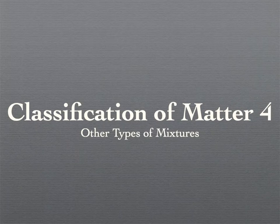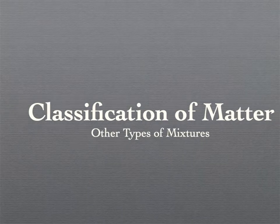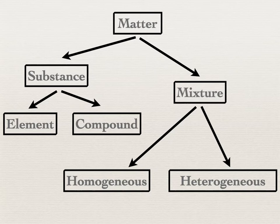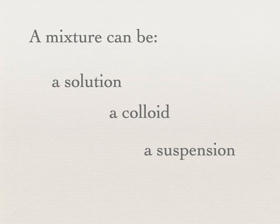In the last video we looked at a simple classification of matter often used in first-year chemistry courses, whereby we broke matter into two broad categories: substances and mixtures. In this video we're going to look at the mixture side in a little more detail and examine three categories of mixtures: solutions, colloids, and suspensions. All of these are particular types of mixtures where typically we have solid particles dispersed in a liquid medium.